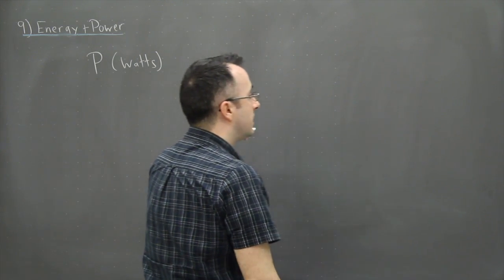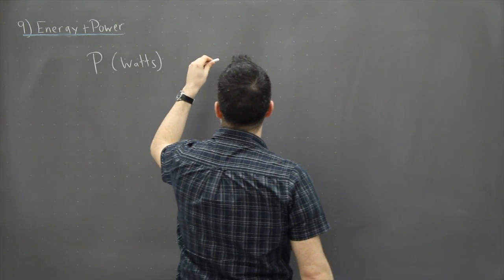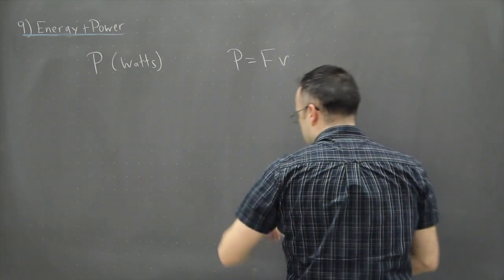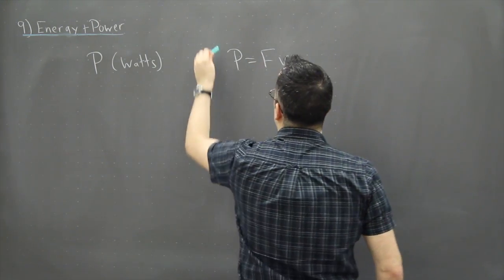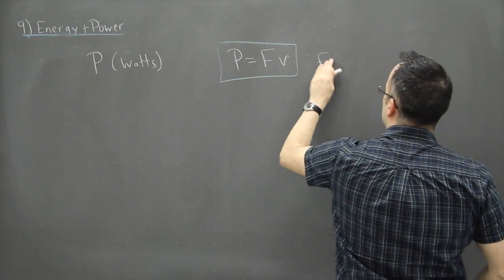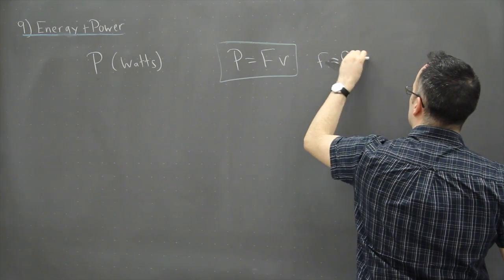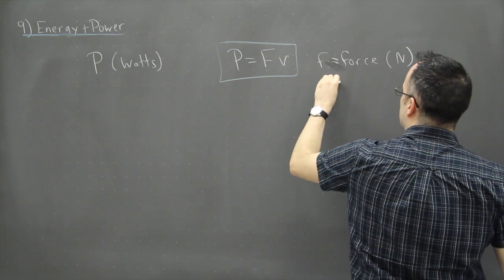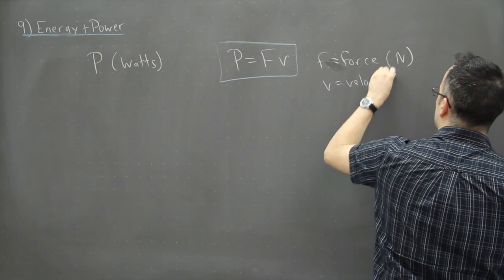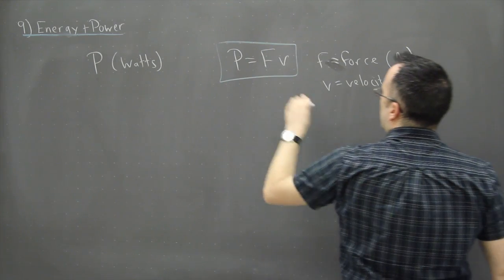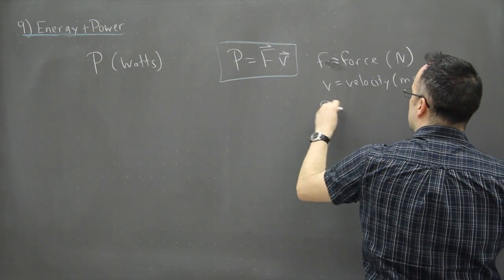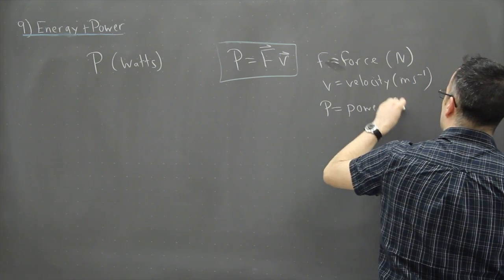If we look at the power, there's actually an equation that you get in your data booklet: power equals F times V. Where F is the force, measured in newtons, and V is the velocity or speed, measured in meters per second. It turns out that force and velocity are vectors, but power is not — it's a scalar. So P, the power, is given in watts.